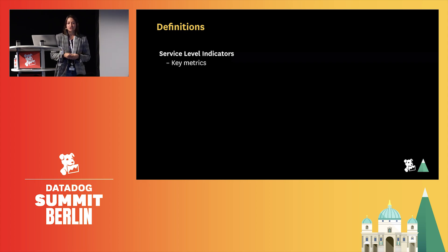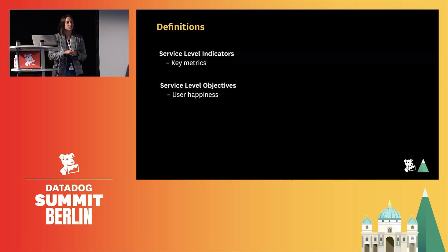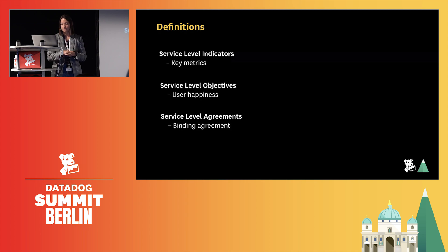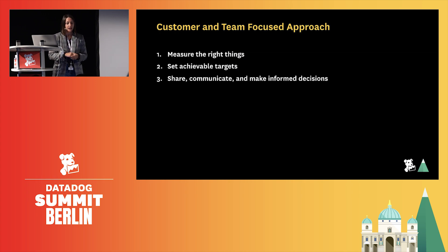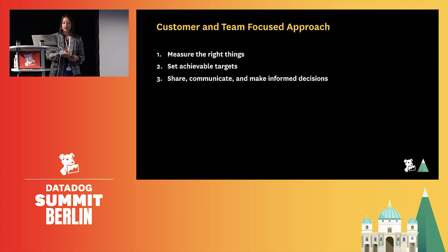Service level indicators are the metrics — this is what you're measuring. Service level objectives are the sweet spot of user happiness, the target that you want to achieve. And service level agreements sometimes get confused with SLOs, but this is the external binding agreement that you have with your user. Altogether, they provide the ability to measure the right things, set achievable targets, and to share, communicate, and make informed decisions — as Frank spoke about with his OKR planning.